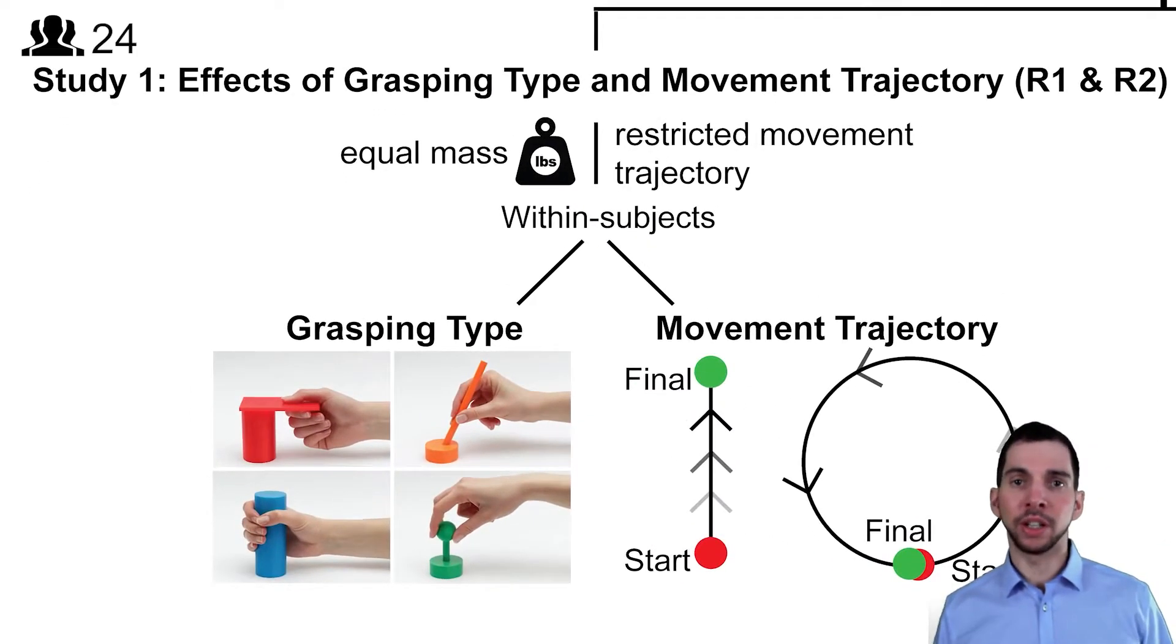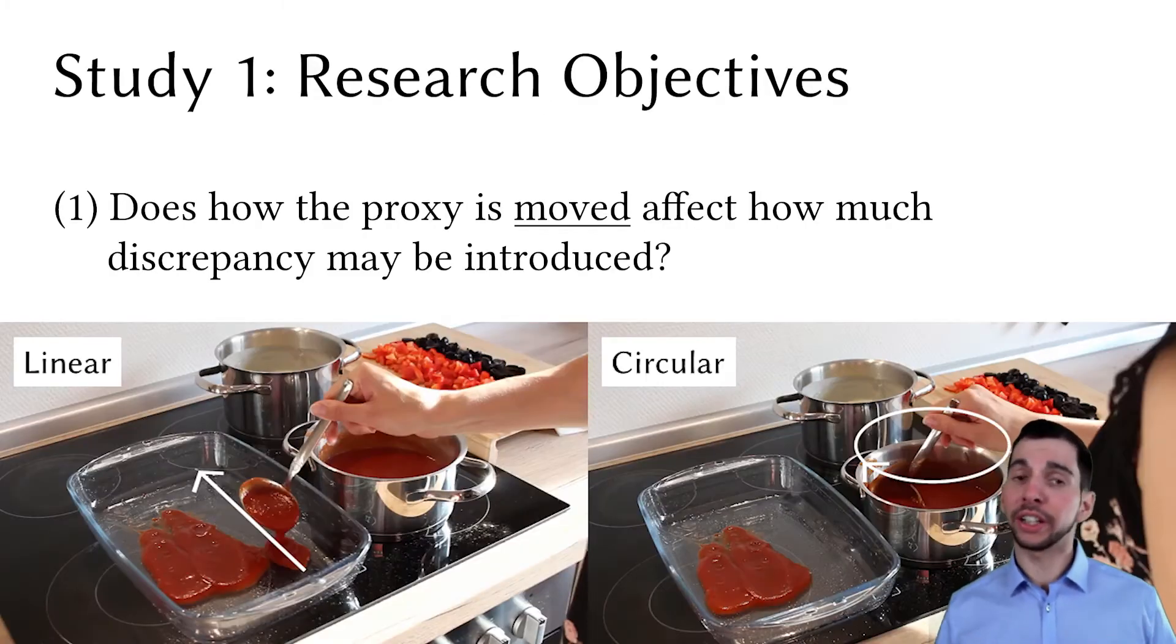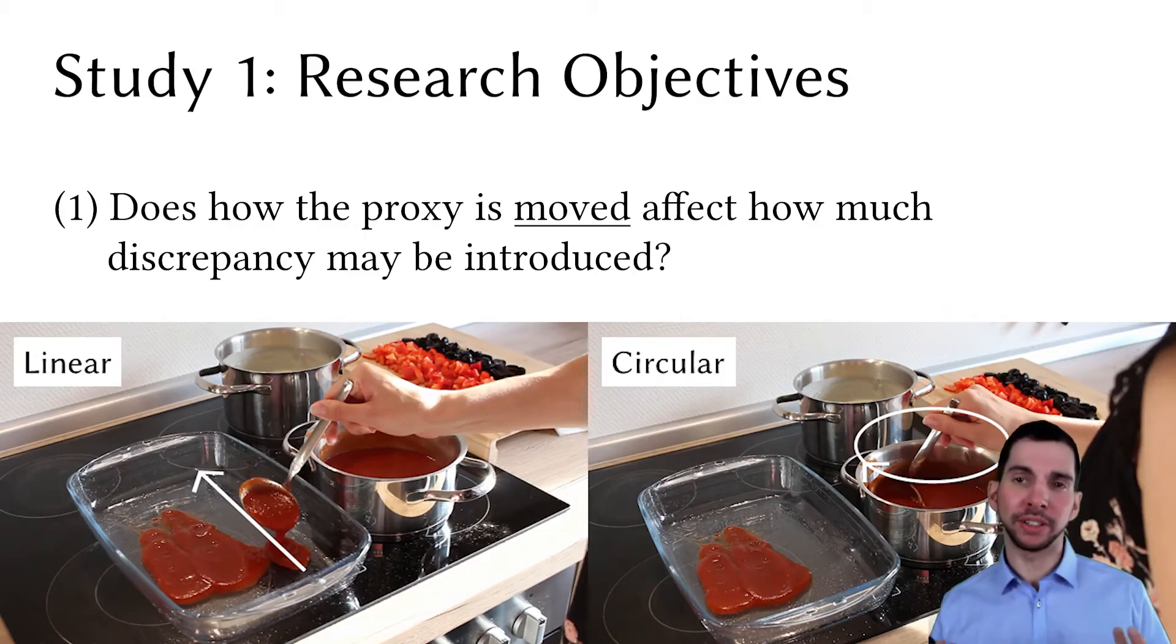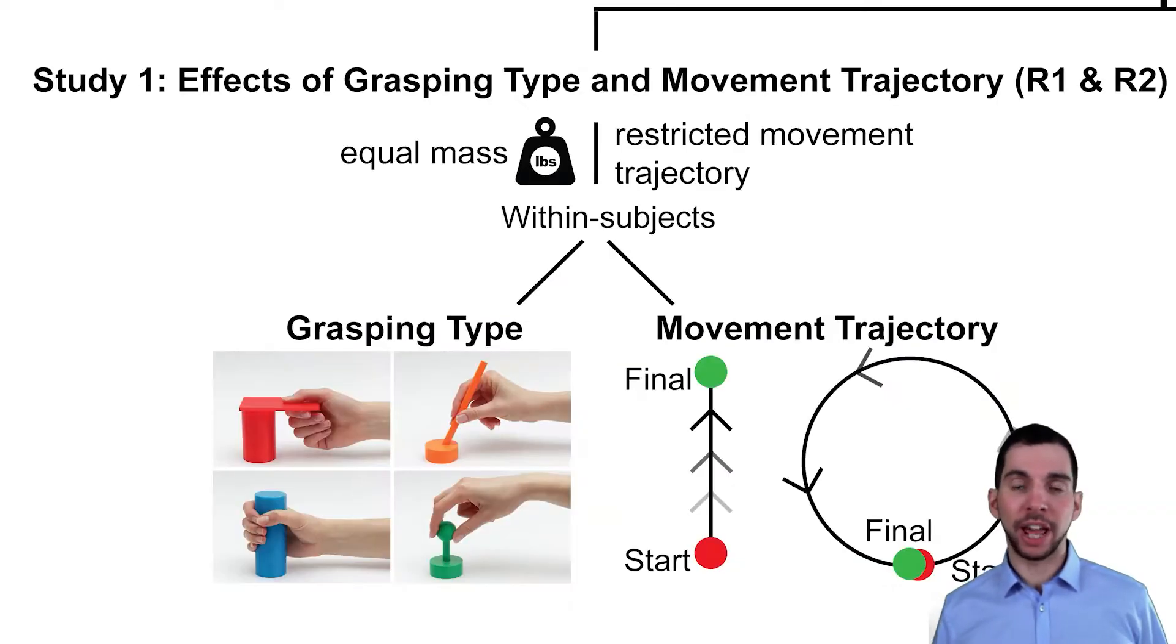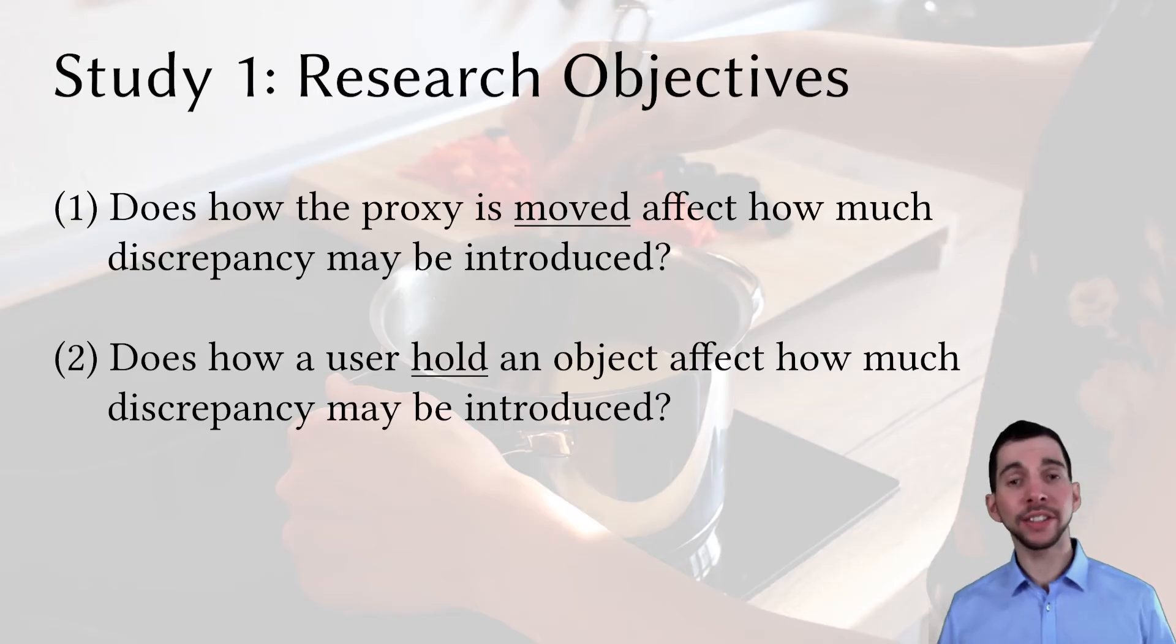In the first study, we explored potential effects of two different movement trajectories, linear and circular, targeting the question whether how the proxy is moved affects how much discrepancy may be introduced. And four different grasping types: lateral, medium wrap, tripod, and riding tripod. To answer the question, does how a user holds an object affect how much discrepancy may be introduced?